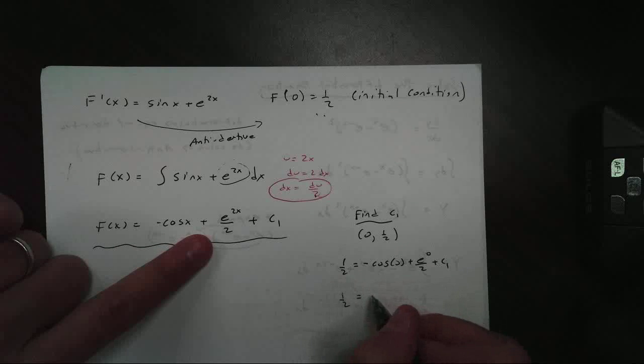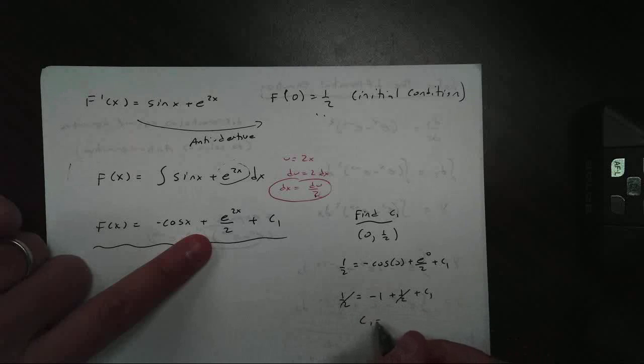Simplifying, 1 half equals, that's negative 1, plus 1 half, plus c1. Easy breezy, 1 half's cancel, c1 equals 1.